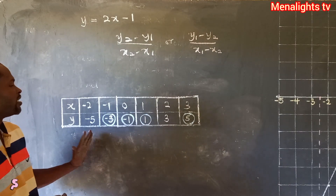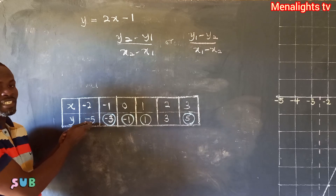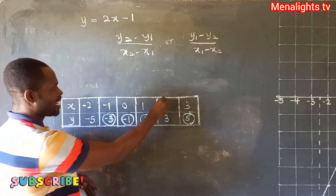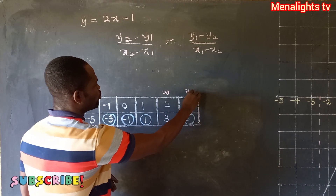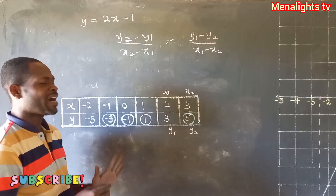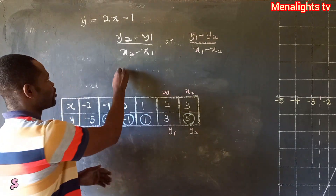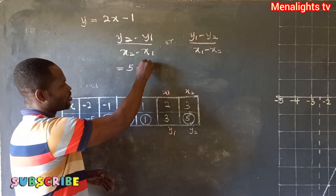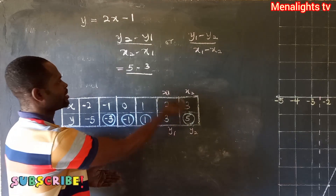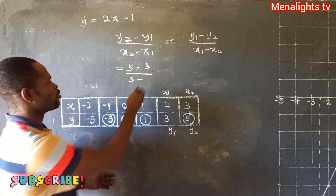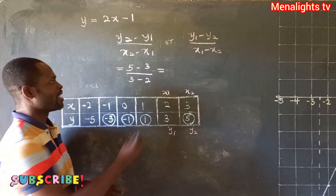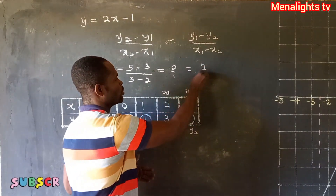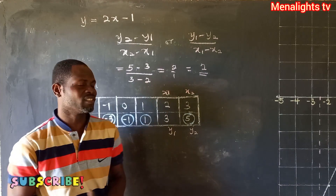Using the table of values, we pick two points: (x1, y1) and (x2, y2). I'll pick x1 = 2, y1 = 3 and x2 = 3, y2 = 5. Substituting: (y2 - y1) / (x2 - x1) = (5 - 3) / (3 - 2) = 2 / 1 = 2. So the gradient of the line graph is 2.